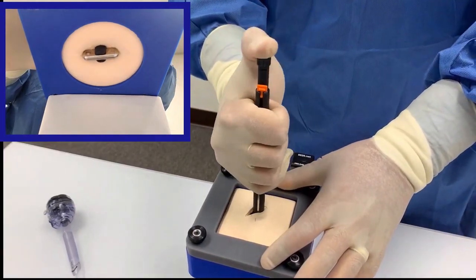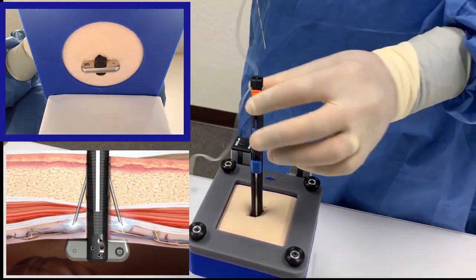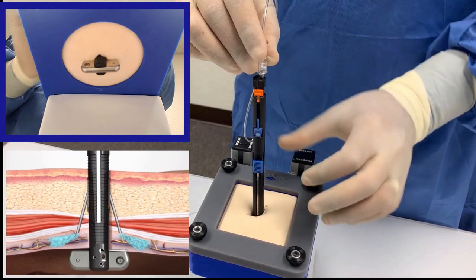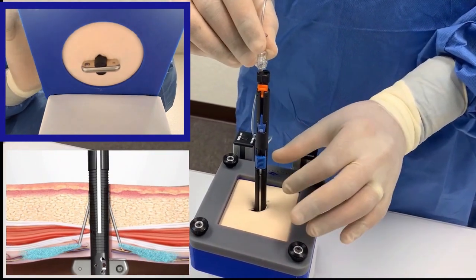Use your thumb to press the plunger to the first click. This advances the needles to the preperitoneal position. Now use the included nerve block needle and tubing to inject local anesthetic. The injection step is optional.